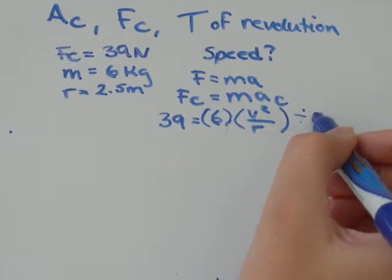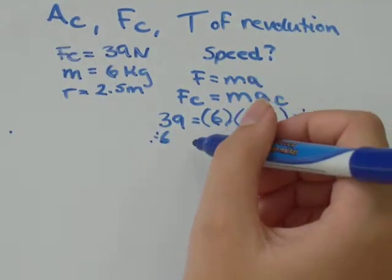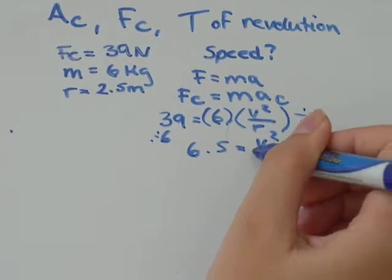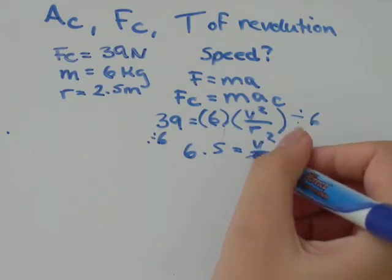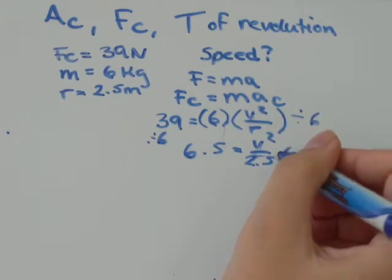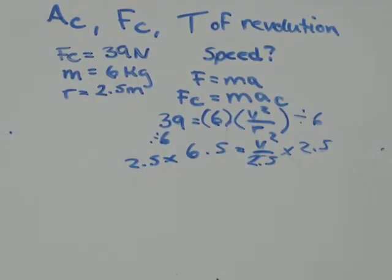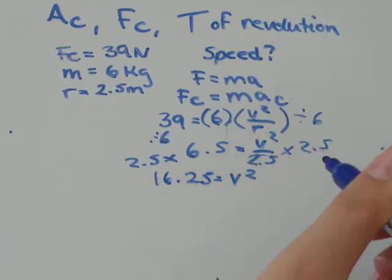So all I'm going to do now is divide by 6 on both sides. 39 divided by 6 is equal to 6.5, and that equals v squared over r. We were told r is equal to 2.5, so I'm going to multiply by 2.5 on both sides. 6.5 times 2.5, I get that's equal to 16.25, and that equals v squared.